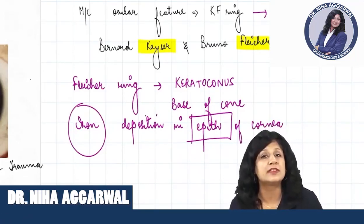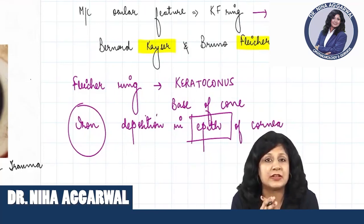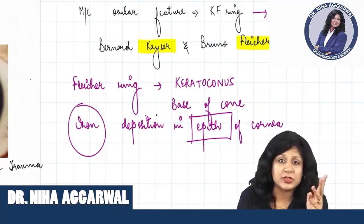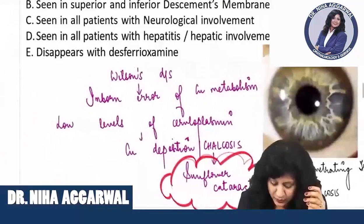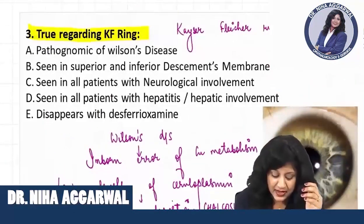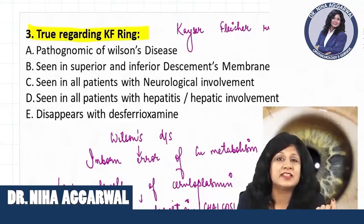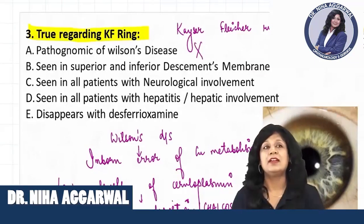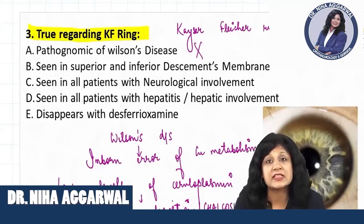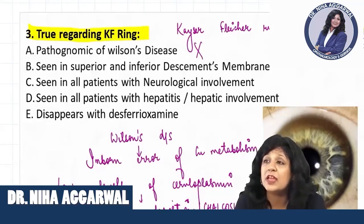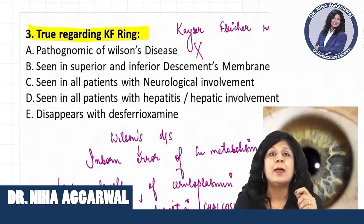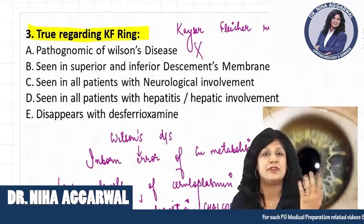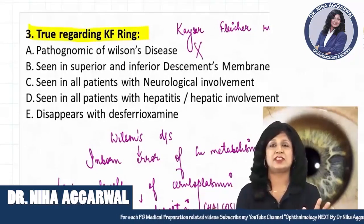Similarly, do you remember Stocker's line? Stocker's line is also an iron deposition that you get in the pterygium. Now looking at the options: first, they are saying it is pathognomonic of Wilson's disease. This is actually a wrong option — it is not pathognomonic. It is the most prominent ocular feature of Wilson's disease, the most common feature in the eye, but it is not pathognomonic because pathognomonic means it is exclusively found in Wilson's disease.